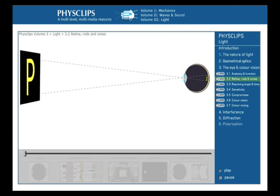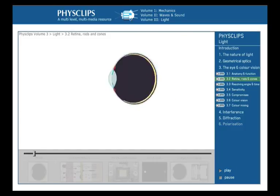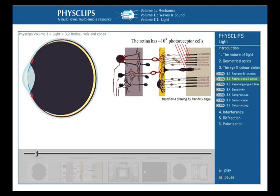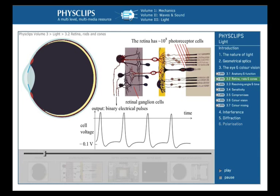In most situations light is focused to form an image on the retina. If anyone would look at the image on the retina they would notice that it is inverted. The retina has roughly a hundred million photoreceptor cells. These are connected to retinal ganglion cells which respond to incoming light by outputting binary electrical pulses which we call action potentials.